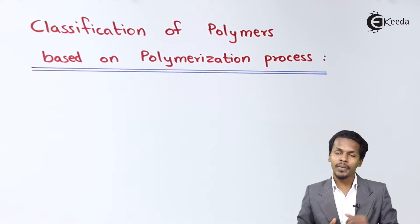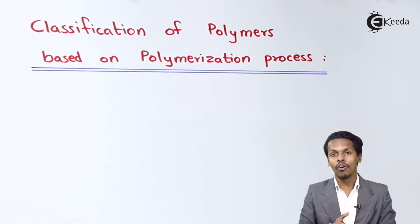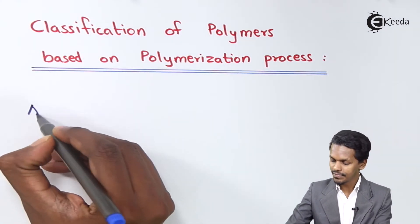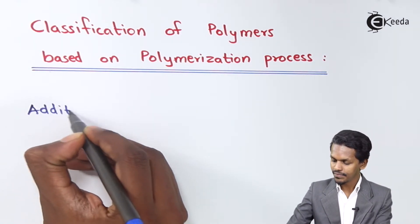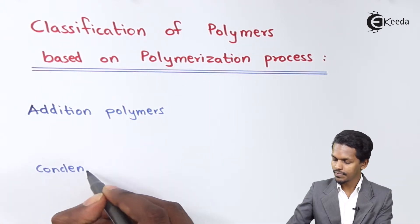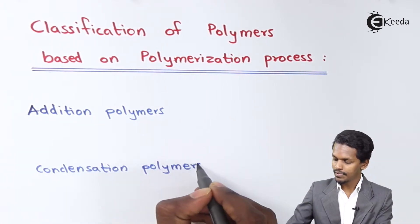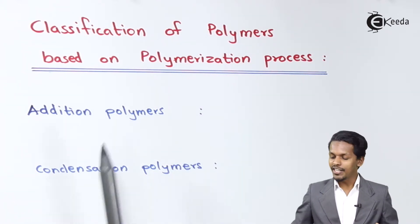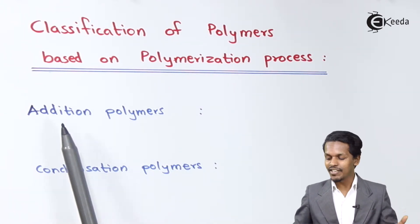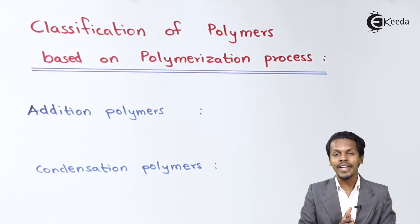There are basically two polymerization processes from which we could get two kinds of polymers, and those products are known as addition polymers and condensation polymers.